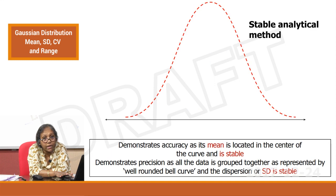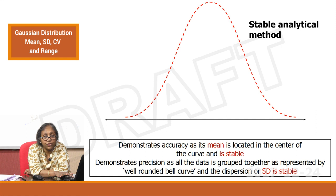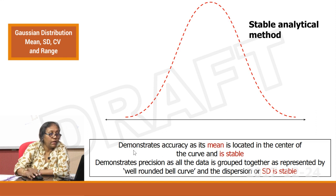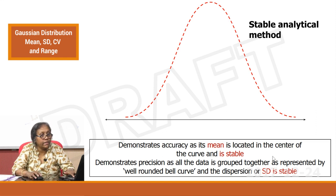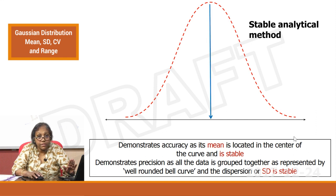Now let us look at what happens in an unstable analytical system — just a very brief overview. Assume this is a stable analytical method. It demonstrates accuracy by its mean. The mean is located at the center of the curve and is stable.